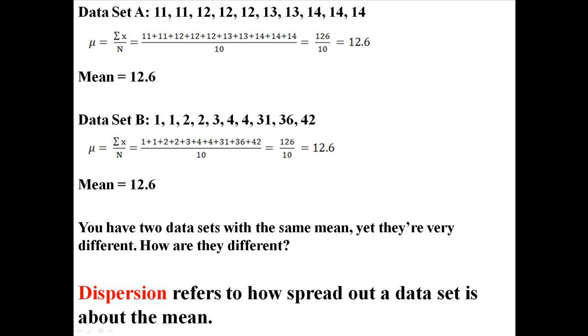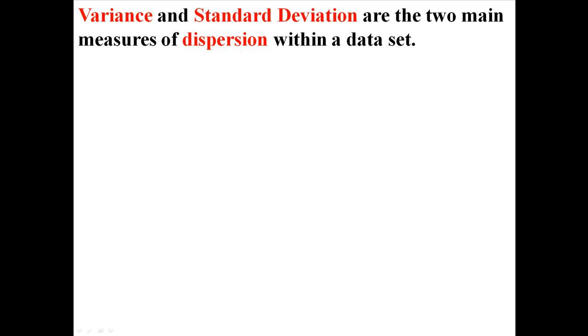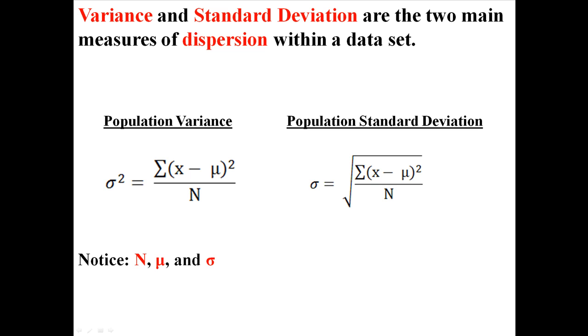Well dispersion refers to how spread out the data set is about the mean. Variance and standard deviation are the two main measures of dispersion within a data set. Now I have two equations here, the equation for population variance and population standard deviation.